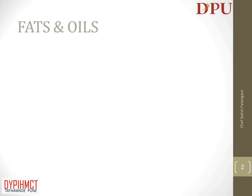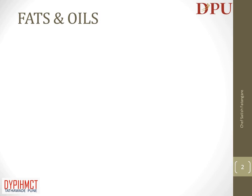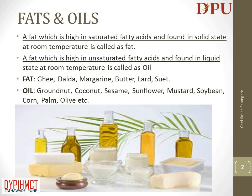In this slide we will discuss about fats and oils. A fat high in saturated fatty acids is solid at room temperature — that is a true fat. A fat that is high in unsaturated fatty acids is liquid at room temperature, which is called oil. Examples of fats are ghee, dalda, margarine, butter, lard, and suet.